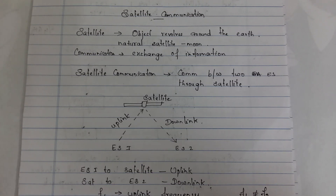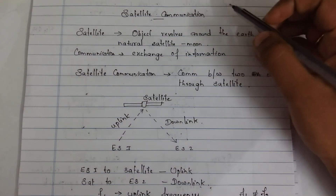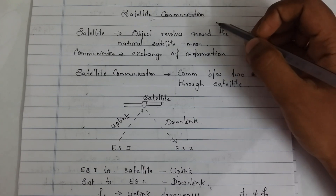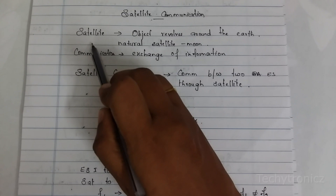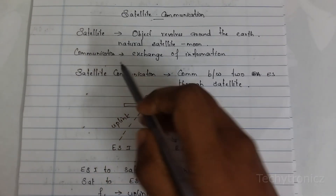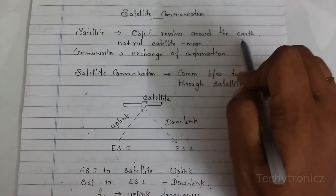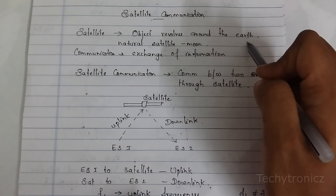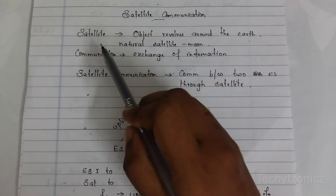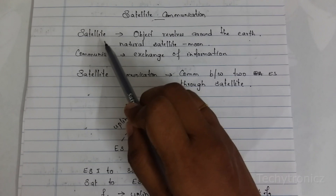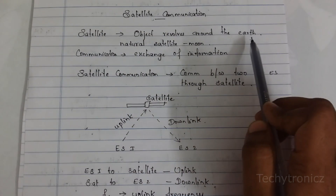Hi students, today we are going to see about satellite communication. Introduction about satellite communication. First of all, what is satellite? Satellite means the object revolves around the earth, or an object revolves around some other object — that is satellite. So here, satellite means the object revolves around the earth.